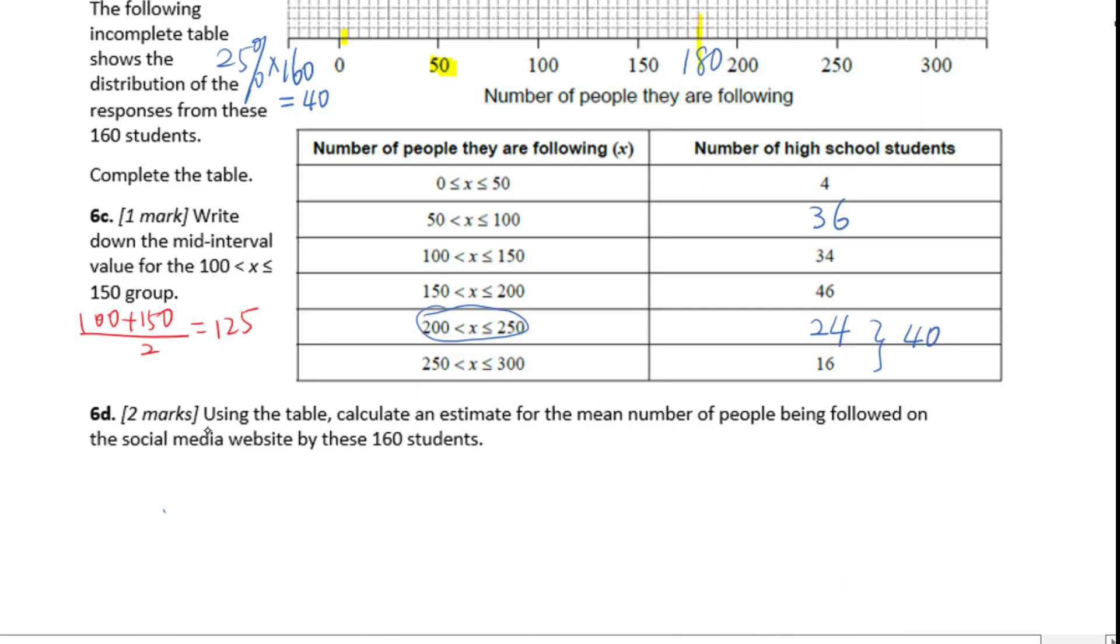Let's go to 6D. Using the table, calculate an estimate for the mean number of people being followed on the social media website by these 160 students. First of all, since this is grouped data, we need to figure out the mid-interval value for each interval. We have 25 here, 75, 125, 175, 225, 275.